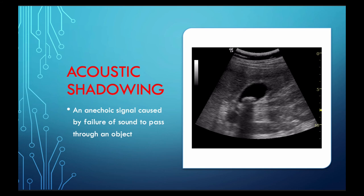Here we see acoustic shadowing — you see a gallbladder with a gallstone inside it. You see the shadow distal to the gallstone, which is that anechoic area below the stone, basically because the sound waves are unable to pass through the calculus structure. This is a helpful hint when locating and identifying gallstones in the gallbladder as opposed to polyps or other things. It's also helpful to identify ribs and rib spaces and identify the spine shadow when doing an aorta ultrasound.